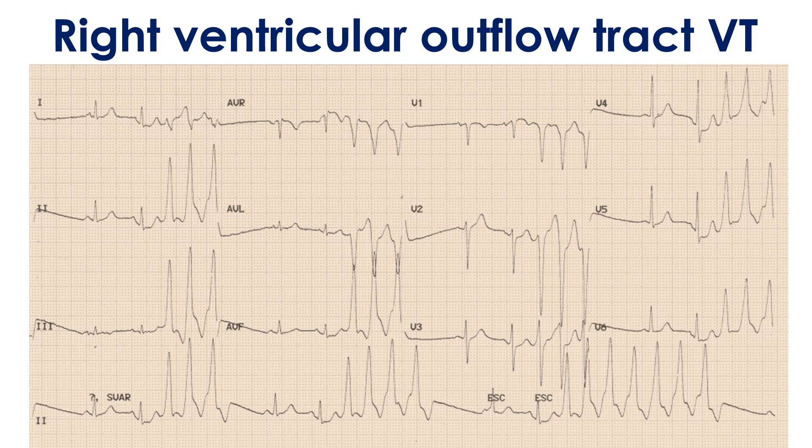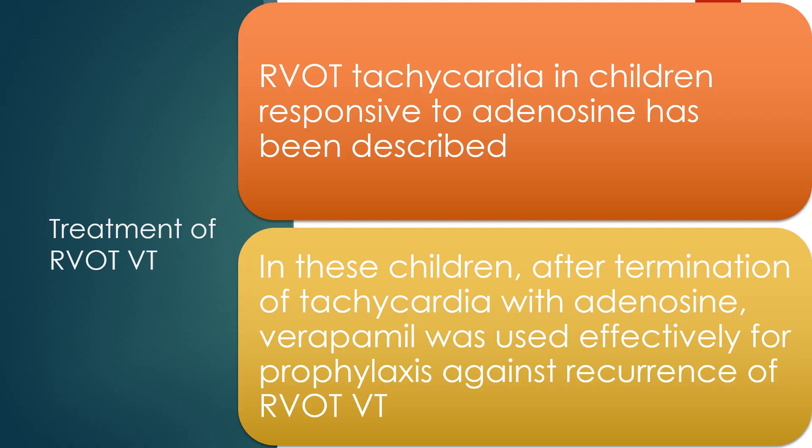RVOT VT occurs in repetitive runs having left bundle branch block morphology and inferior axis. RVOT tachycardia in children responsive to adenosine has been described. In these children, after termination of tachycardia with adenosine, verapamil was used effectively for prophylaxis against recurrence.